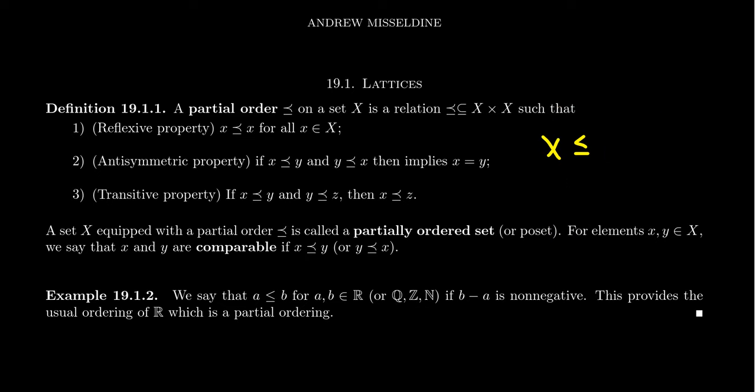So if X is equipped with a partial order, we call it a partially ordered set, although some people call this a poset for short. Some people take offense to the word poset, they think it's too crude, but I'm okay with either one. A set equipped with a partial order, sometimes called a partial ordering, is a poset or partially ordered set.